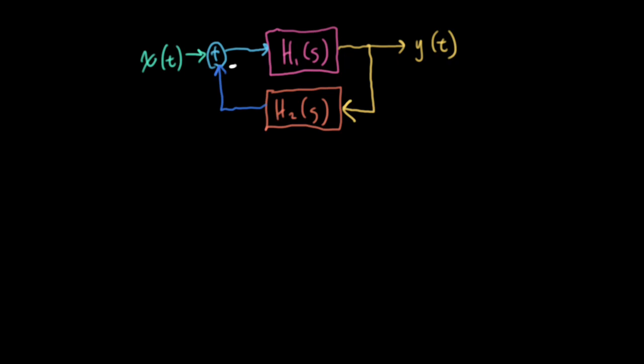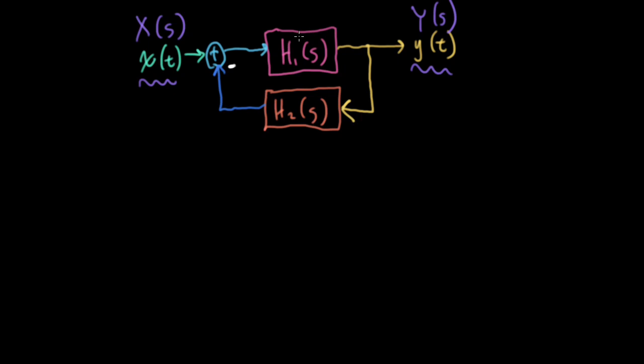Now, in writing block diagrams like this, it's traditional to take the functions that are on the lines, the signals, and write them in the time domain. Of course, we could represent these in the Laplace domain. And in fact, that's what we're going to do in the equations. Just as it's traditional to represent the signals in the time domain, it's traditional to express the systems in terms of their transfer functions. But of course, we know that these could just as easily be represented in terms of their impulse responses.